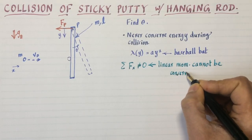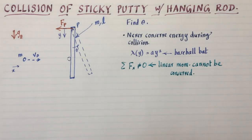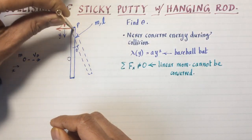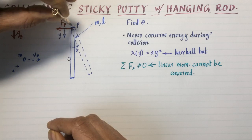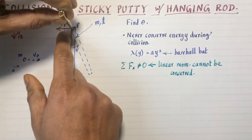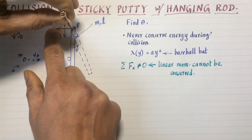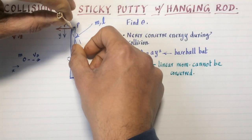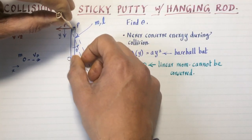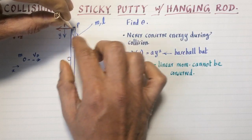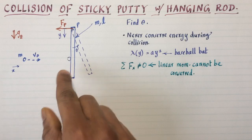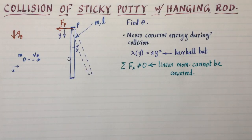How about angular momentum? That's our only hope. It turns out angular momentum can be conserved but only about one special axis, the pivot. The distance from the reaction force to the pivot is zero, and the force of gravity passes through the pivot, so there's no external torque. We can conserve angular momentum for the duration of impact while the rod is still hanging vertically.